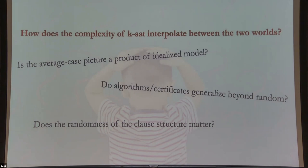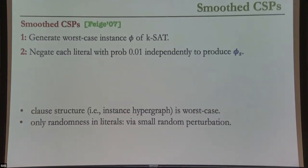We have clever ideas, algorithms and certificates. It would be a shame if they're very married to the specific model. So the actual question is: what happens to all these results if I move away from the specific model of randomness used to prove them? This was the motivation for Feige in 2007 — about 13 years ago — when he defined a significantly more general model of random CSPs in an effort to study this interpolation, specifically where does the behavior of more general random KSAT models sit.